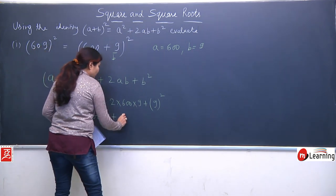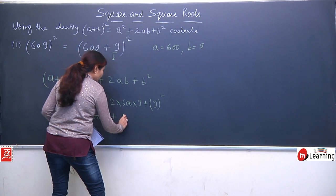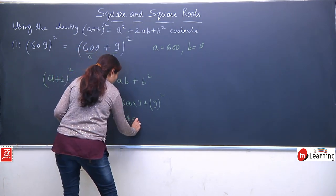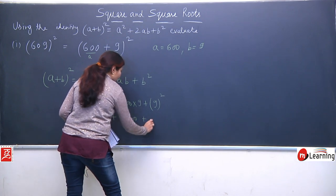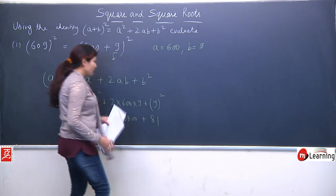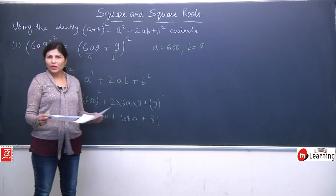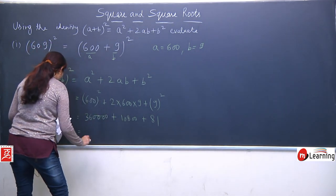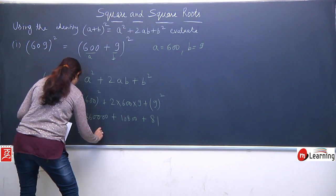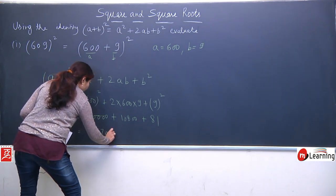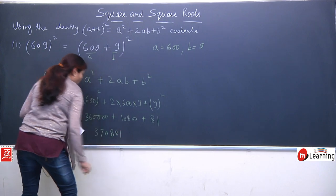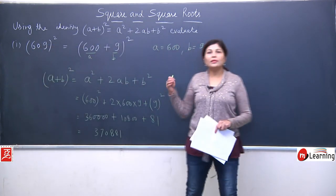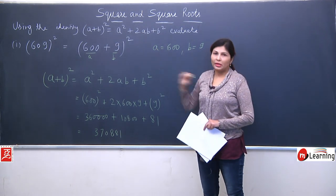Plus 2×600×9: 6×2 = 12, and with the zeros that gives 10800. Plus 9 square, which is 81. So adding all these together, we get 370881. By using the identity it is much easier compared to direct multiplication.